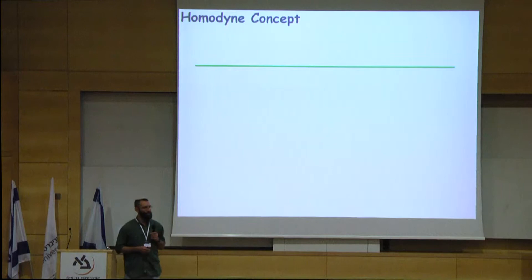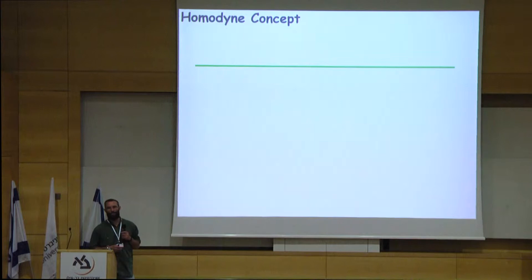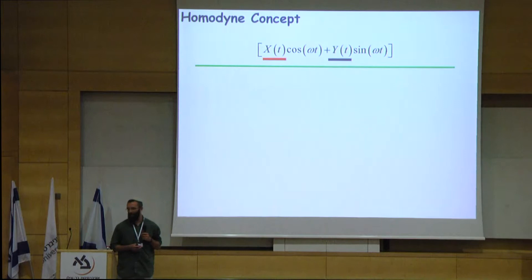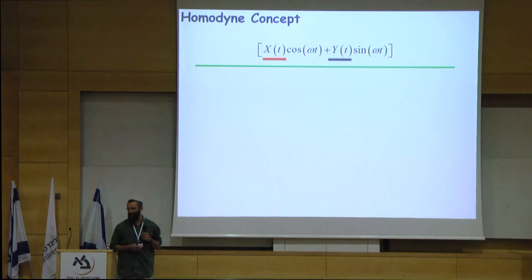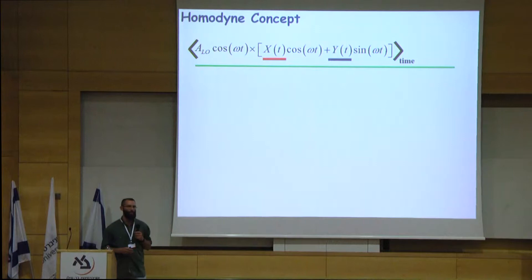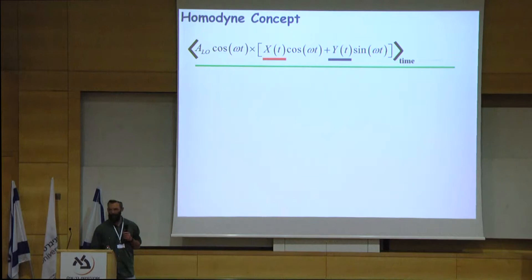It's similar to the calculation of the coefficients of a Fourier series. We have our field oscillation with time-dependent quadrature amplitude, and we multiply it by a strong coherent classical local oscillator with a well-defined amplitude and phase, and then we integrate or average the product. If we tune the phase of the local oscillator to a cosine wave oscillation, we obtain the x quadrature amplitude. And if we tune the phase of the local oscillator to a sine wave, we measure the y quadrature amplitude.